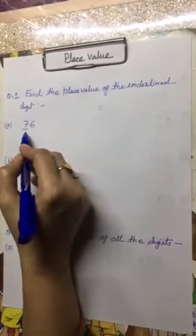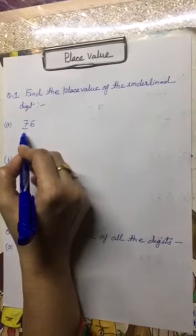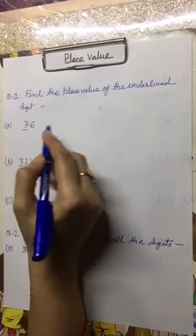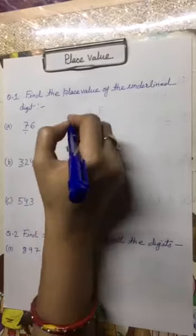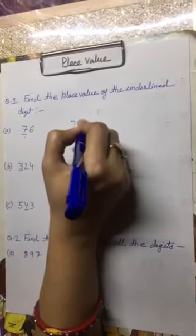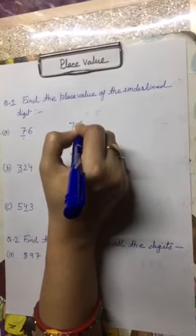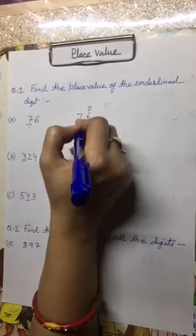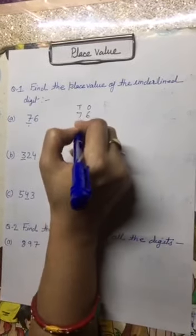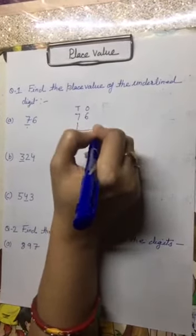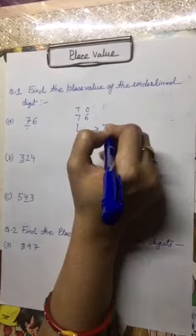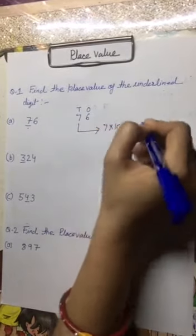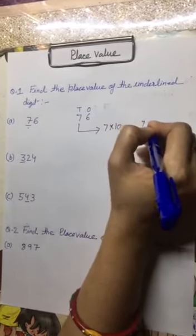The number is 76 and we have to find out the place value of number 7. First we will write down the position of each number. So 6 is in 1's place and 7 is in 10's place. So its place value is 70.